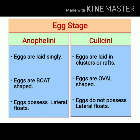Eggs are laid down singly by Anophiline mosquitoes, whereas eggs are laid down in clusters or rafts by Culicine mosquitoes. Each raft may contain 100 to 250 eggs; the only exception for this is Aedes. Eggs of Anophiline mosquitoes are boat-shaped, while eggs of Culicine mosquitoes are oval-shaped. Eggs of Anophiline mosquitoes possess lateral floats.